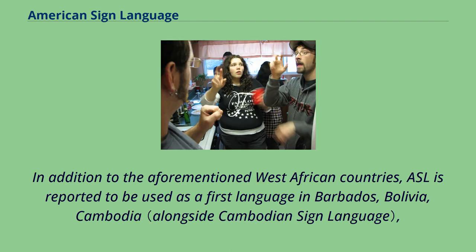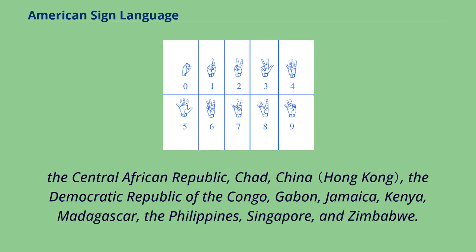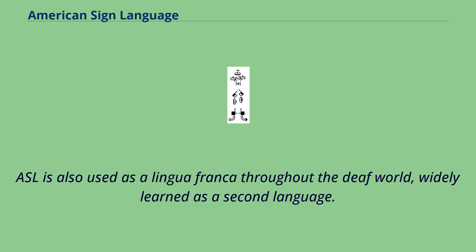In addition to West African countries, ASL is reported to be used as a first language in Barbados, Bolivia, Cambodia, the Central African Republic, Chad, China, the Democratic Republic of the Congo, Gabon, Jamaica, Kenya, Madagascar, the Philippines, Singapore, and Zimbabwe. ASL is also used as a lingua franca throughout the deaf world, widely learned as a second language.